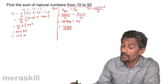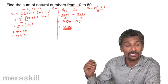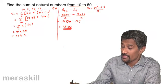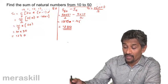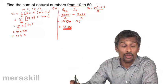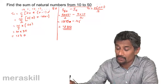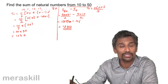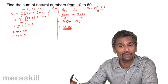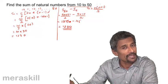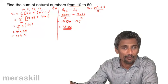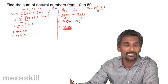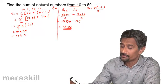Remember, when talking about natural numbers we are dealing with counting numbers like 1, 2, 3, 4, 5, 6 — the primary numbers which we were introduced to as children.